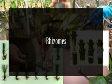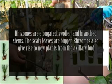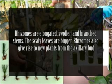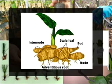Rhizomes are elongated, swollen, and branched stems. The scaly leaves are bigger. Rhizomes also give rise to new plants from the auxiliary buds — for example, ginger and turmeric.